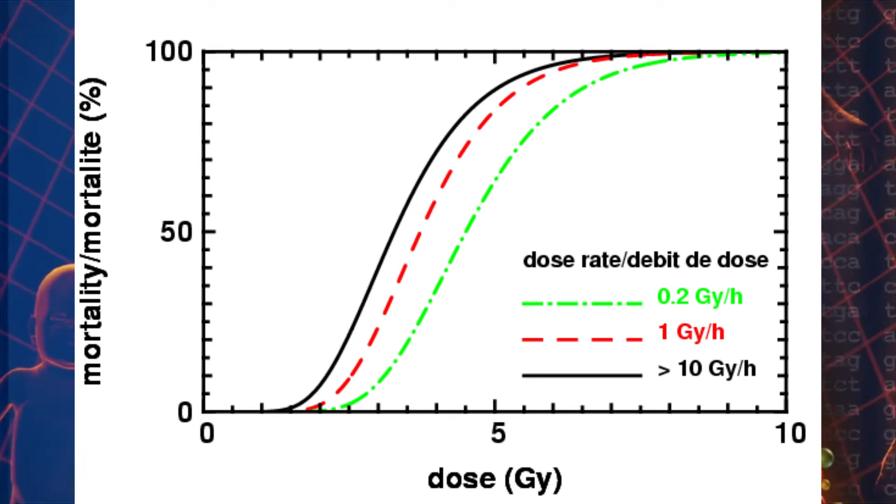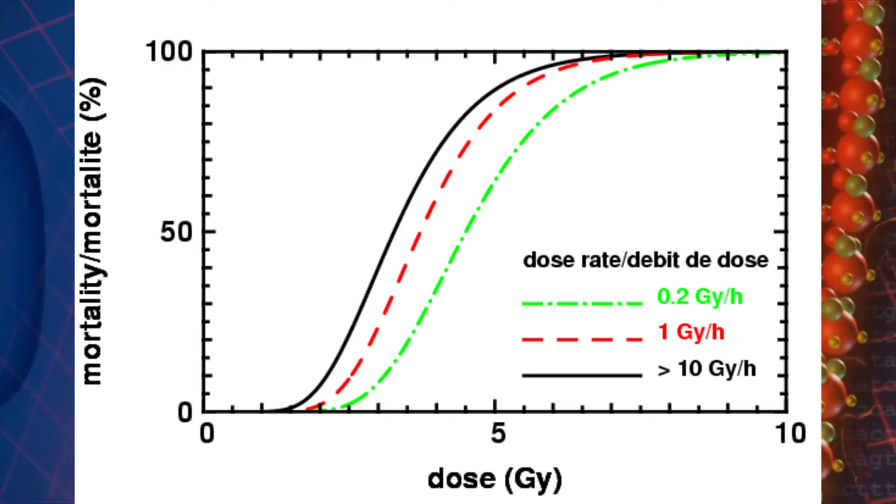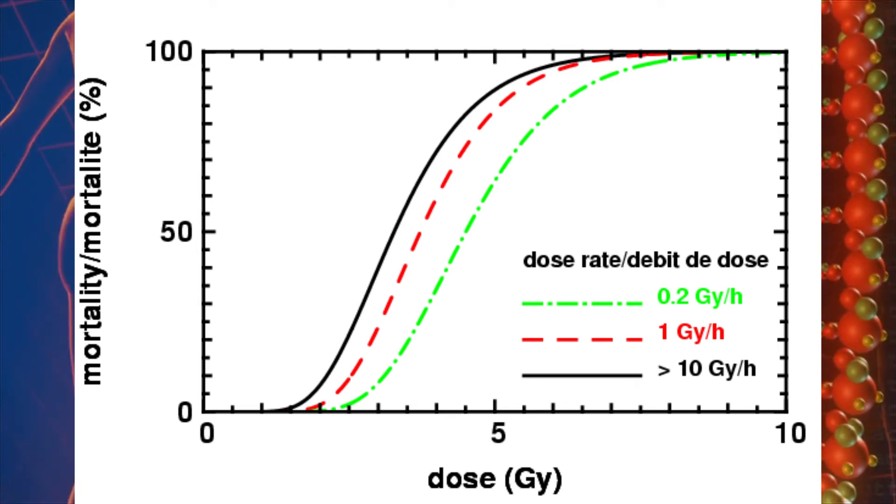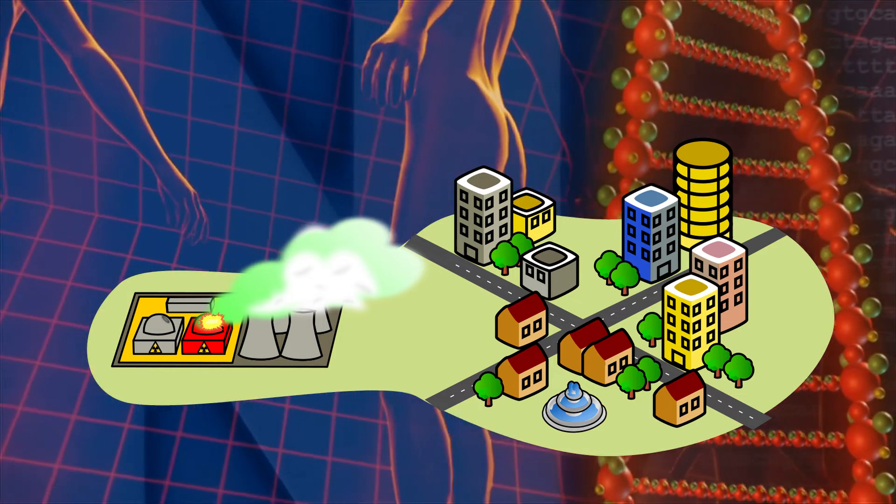This is why different measures are used. There's something called the whole body absorbed dose. There's also equivalent dose, effective dose, and committed dose. These are used in different circumstances.